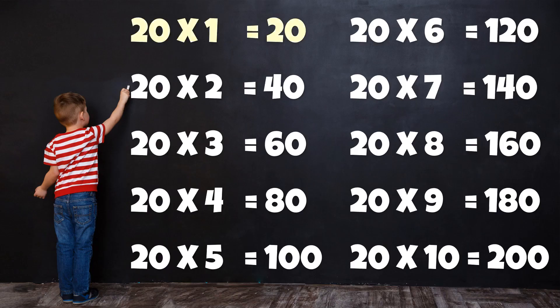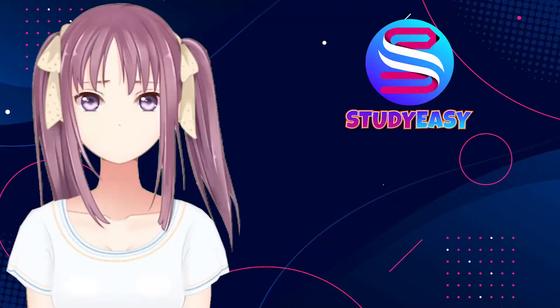Table of 20. 20 1's are 20. 20 2's are 40. 20 3's are 60. 20 4's are 80. 20 5's are 100. 20 6's are 120. 20 7's are 140. 20 8's are 160. 20 9's are 180. 20 10's are 200.